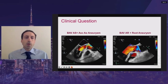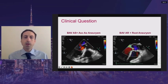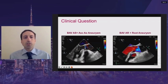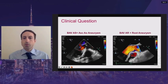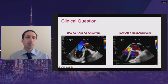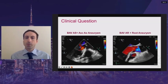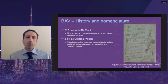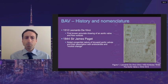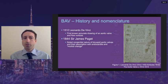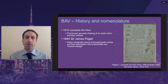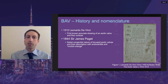I'll start with a clinical question. Here we have two bicuspid aortic valves, and the question is: which patient is more likely to suffer from a catastrophic aortic event like an aortic dissection? This patient on the left with aortic stenosis and an ascending aortic aneurysm, or the patient on the right with aortic regurgitation and a root aneurysm? Now, most of what we know about the aortic valve is based on at least hundreds of years of observation and study, with Leonardo da Vinci being credited for the first accurate drawing of aortic valves with the associated flow vortices.